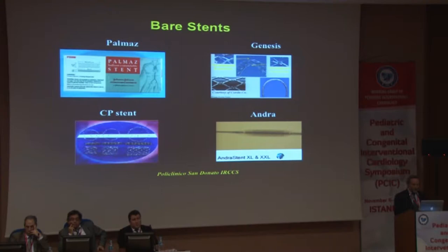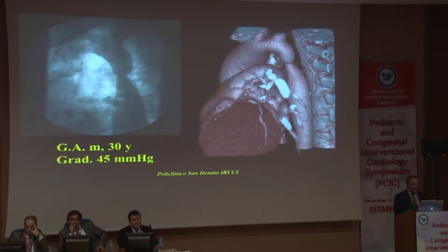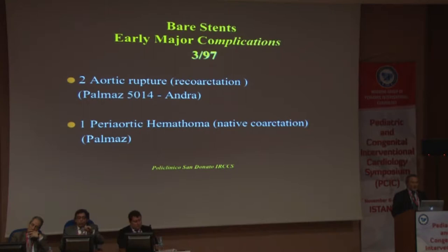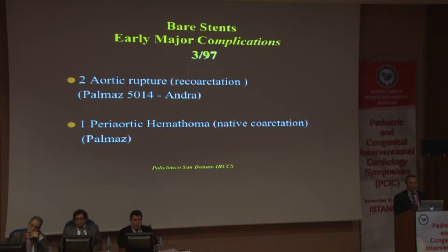We used all types of bare metal stents, starting from the original Palmaz stent many years ago, which has since been abandoned. That's an example of a moderate native coarctation with a 45 mmHg gradient — immediately after stent implantation, a nice result with zero gradient and persistence of good results during follow-up. We experienced some complications with bare metal stents: in three out of 97 patients, we had two aortic ruptures — both in recoarctation cases, one using a Palmaz stent and another using an IntraStent — and one case with near-complete rupture or peri-aortic hematoma in native coarctation.